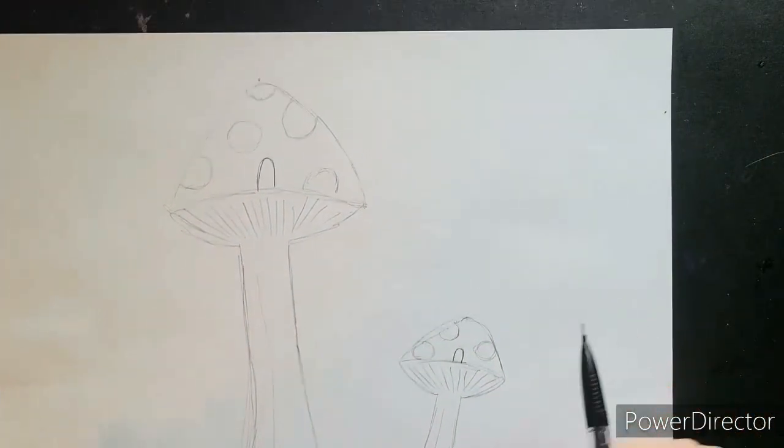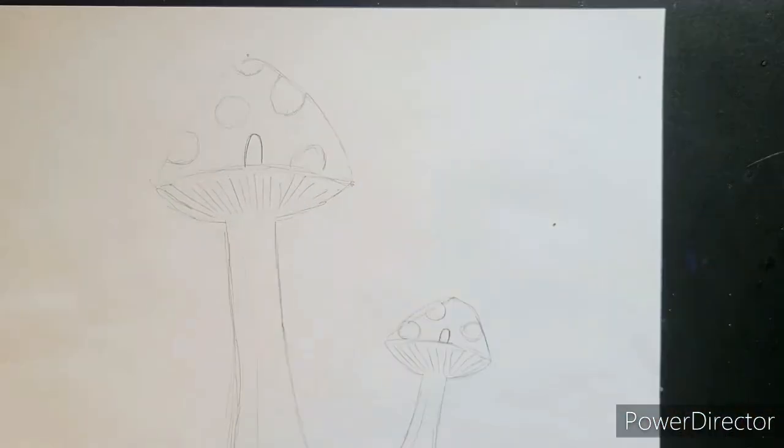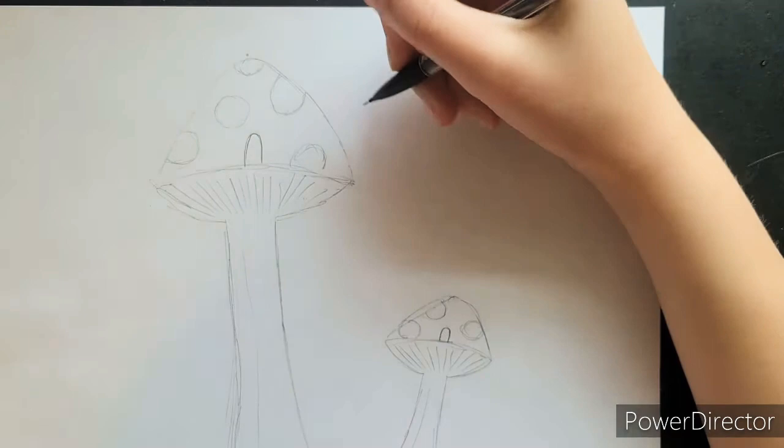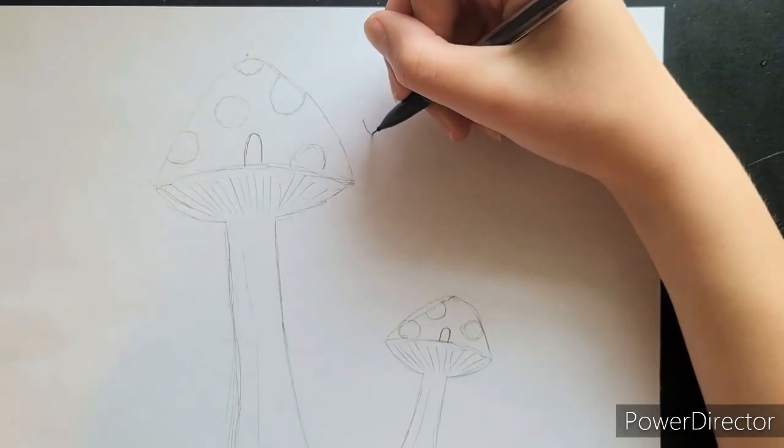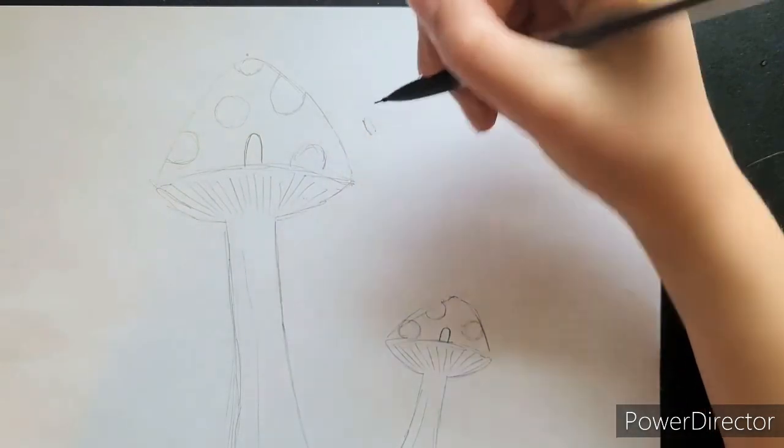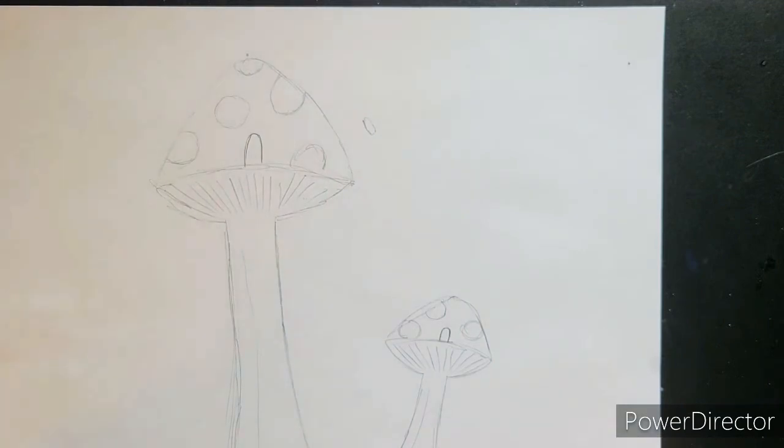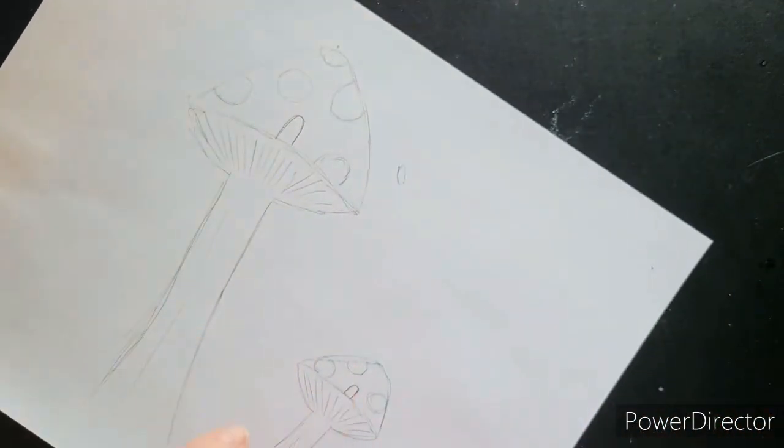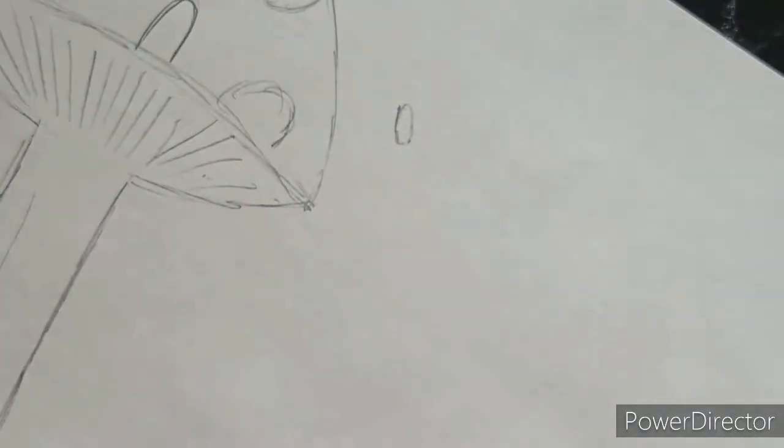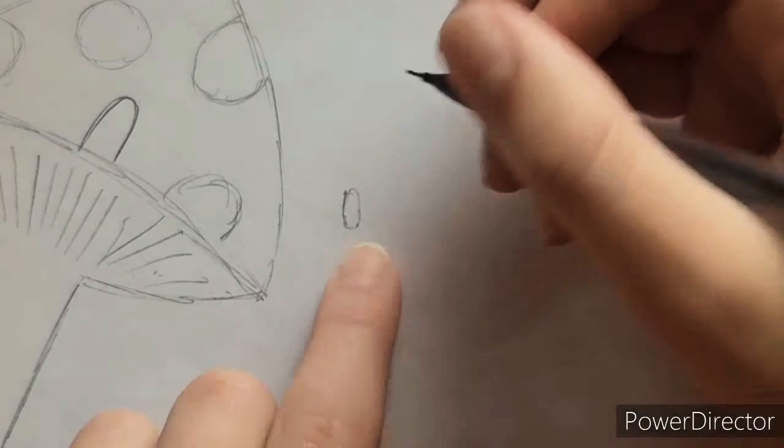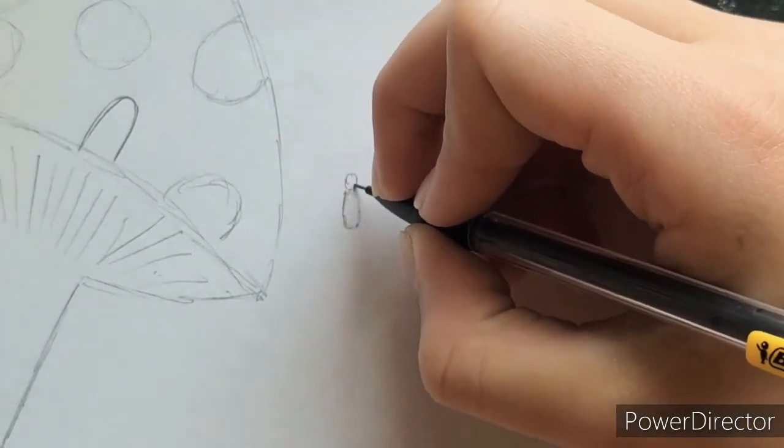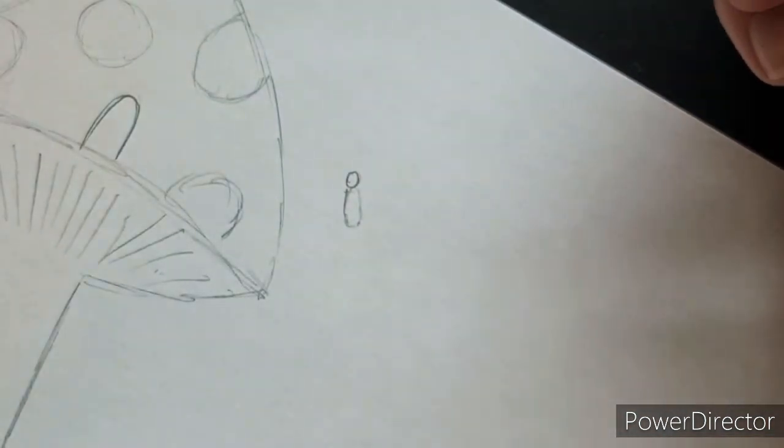Now that we're done with our mushrooms, we're going to draw the little fairy. We'll make our fairy right up here by this mushroom. Draw a little oval - this will be the body of your fairy. I'm going to turn this sideways and zoom in so you can see it. Right here, we're going to make a circle. This will be the head of your fairy.